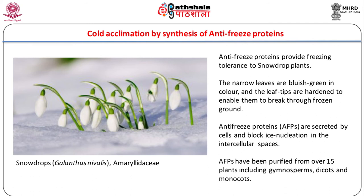Cold acclimation by synthesis of antifreeze proteins: antifreeze proteins (AFPs), also known as ice binding proteins (IBPs), have evolved as an important adaptation in numerous organisms exposed to subzero temperatures. Antifreeze proteins are secreted by overwintering plants and provide freezing tolerance, as shown in snowdrops of the family Amaryllidaceae. The narrowed leaves are bluish green in color and the leaf tips are hardened to enable them to break through frozen ground. Antifreeze proteins are secreted by cells and block ice nucleation in the intercellular spaces, and have been purified from over 15 plants including gymnosperms, dicots, and monocots.